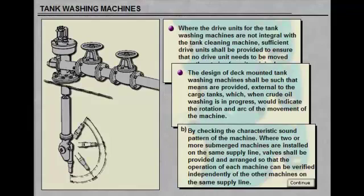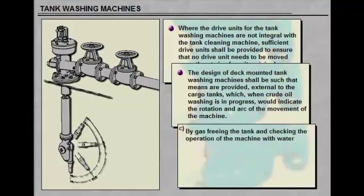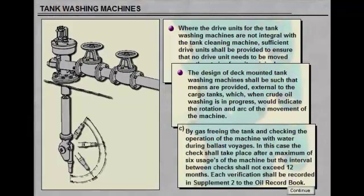C, by gas-freeing the tank and checking the operation of the machine with water during ballast voyages. In this case, the check shall take place after a maximum of 6 usages of the machine and the interval between checks shall not exceed 12 months. Each verification must be recorded in Supplement 2 in the Oil Record Book. The method of verification shall be stated in the Operations and Equipment Manual.